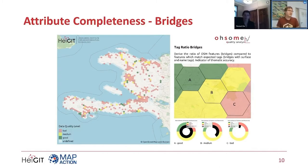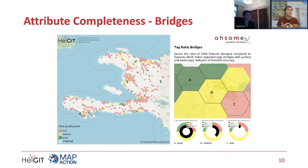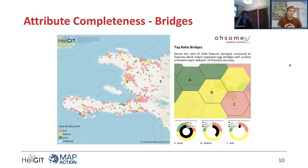As mentioned at the beginning, indicators are the small components, and we can put together indicators in the way we want, weighting different indicators, and together they will form a report. This is the whole idea behind the Awesome Quality Analyst.